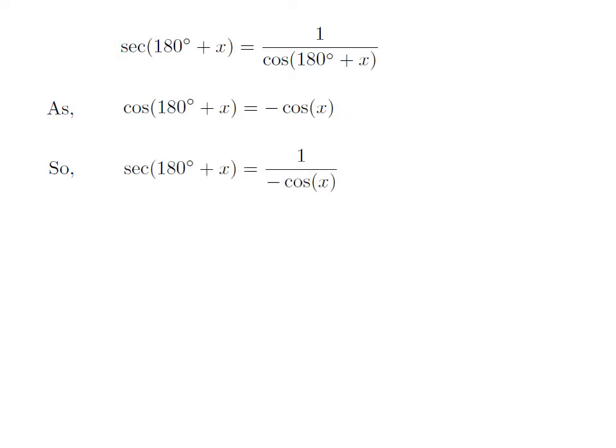Let us apply the above identity in the expression for secant of 180 degree plus x. So secant of 180 degree plus x is equal to 1 divided by minus cosine of x. Since 1 divided by cosine of x is equal to secant of x, secant of 180 degree plus x is equal to minus secant of x.